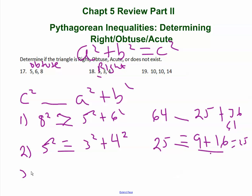And in number 3, we have 14 squared blank 10 squared plus 10 squared. So what do we have? 196.